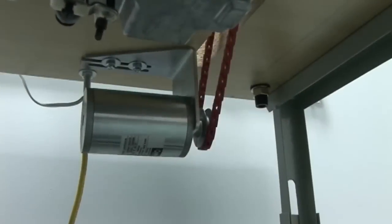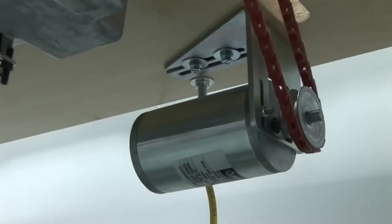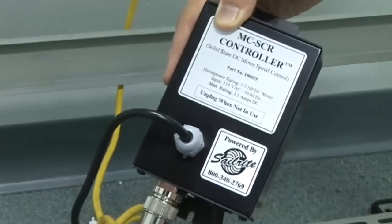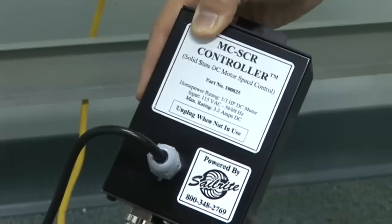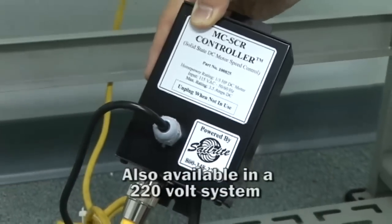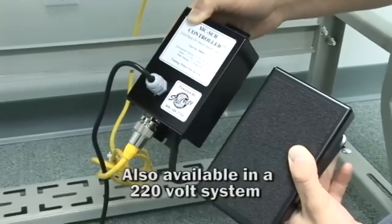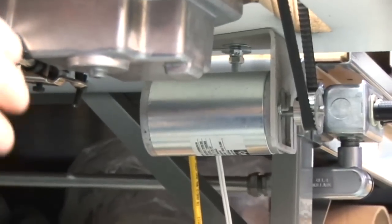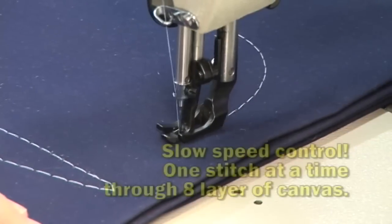This package includes the MCSER power system. The MCSER power system is a silicon controlled rectifier. This solid state controller with 120 volt DC motor is compact, powerful and offers much greater slow speed control and power than the clutch motor or even a servo motor.